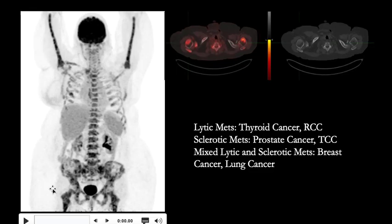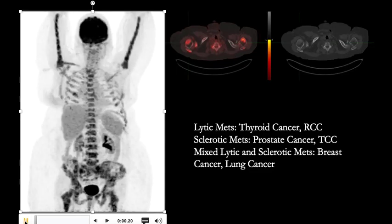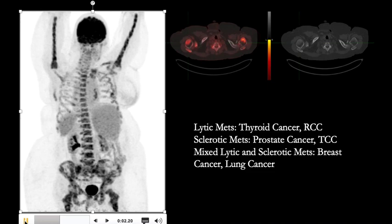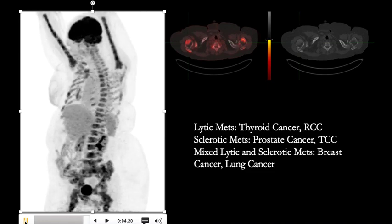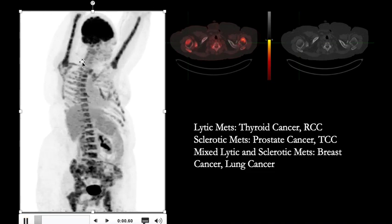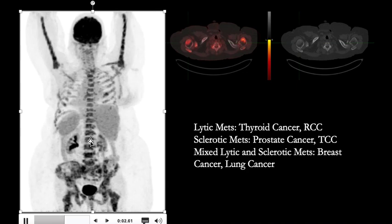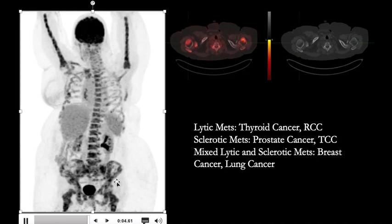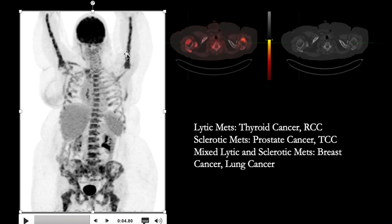Let's look at another case. This is a patient with history of breast cancer and we are looking at a whole body scan from this patient's FDG PET CT study. We see increased uptake in the axial skeleton and also involving the proximal aspect of the femur and the humerus. On the right we have a transaxial fused PET CT image and the CT in bone windows showing sclerotic foci that are hypermetabolic. This patient has extensive bone metastasis which are sclerotic in nature and hypermetabolic.